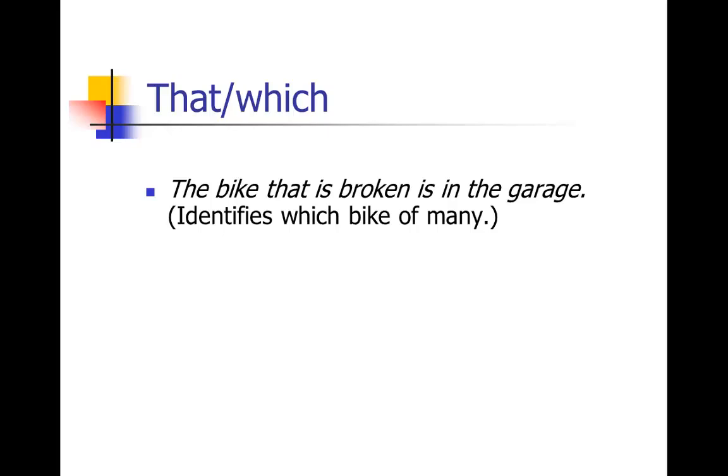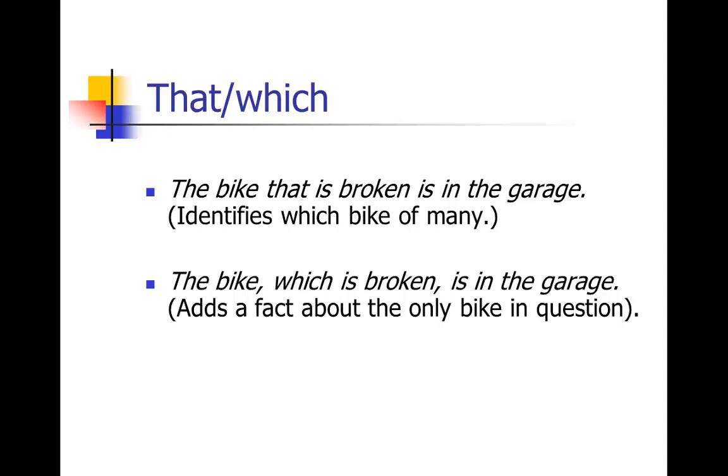A few more examples. If you said the bike that is broken is in the garage, that tells you that the bike that's broken is in the garage, the one that's working fine is on the driveway. It identifies one bike out of many. So that's essential information, or we wouldn't know what bike you were talking about. Compare that with the bike, which is broken, is in the garage. This is just adding an extra piece of information about the one bike in question. Everybody knows we're only talking about this one bike, and here's some extra information about it. So again, because it's not essential, it's set off with commas. That's really the way you can get this right: if you're setting something off with commas, use which. And if you're not setting it off with commas, use that.